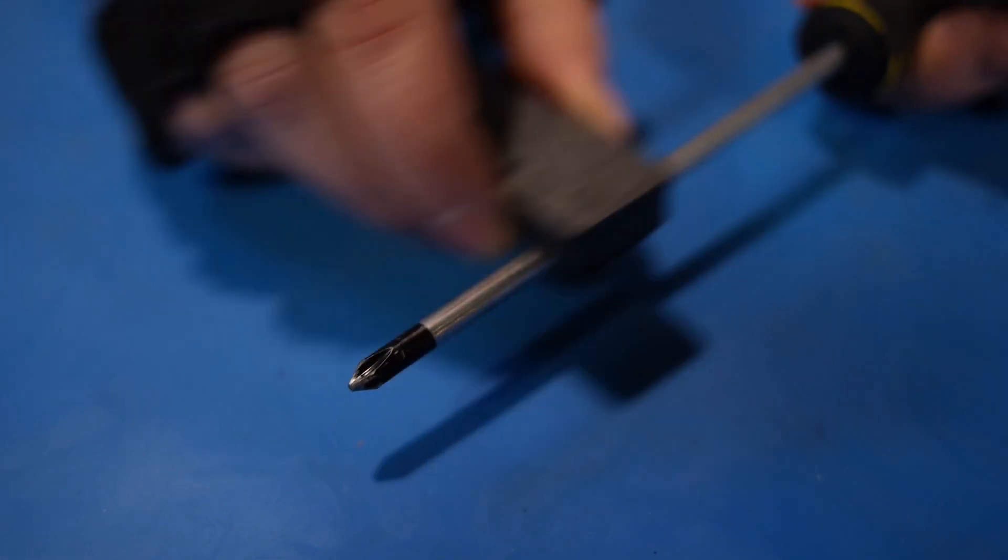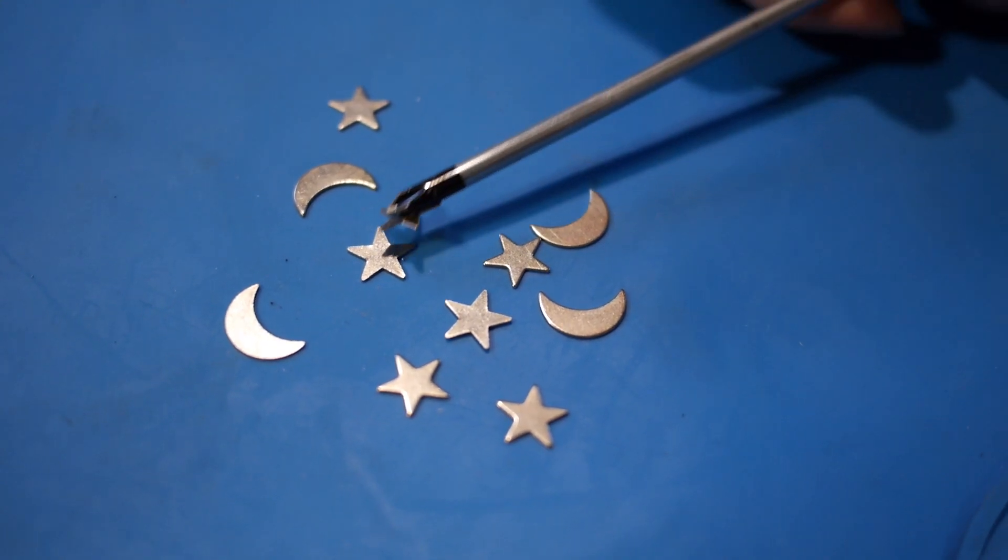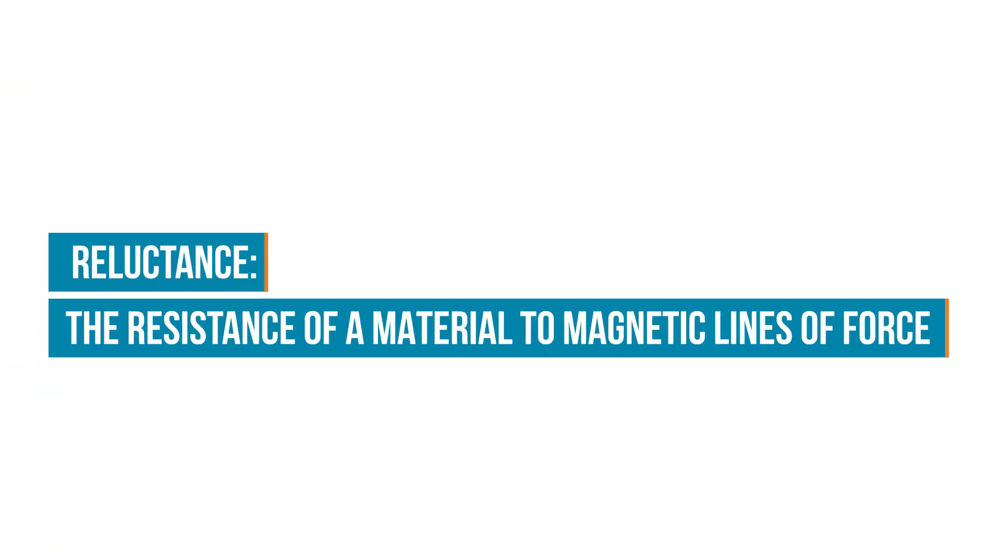Have you ever rubbed a magnet on a piece of metal and found out that afterwards other pieces of metal would stick to it? This is because it's possible to magnetize an object simply by placing it within the field of a magnet. Reluctance is the resistance of a material to magnetic lines of force. Materials with a low reluctance can be easily magnetized.